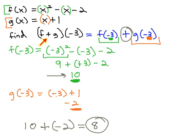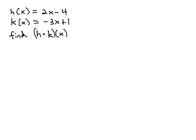We can use this idea with any operation. For example, let's do one with multiplication. If h(x) = 2x - 4 and k(x) = -3x + 1, let's find (h × k)(5).